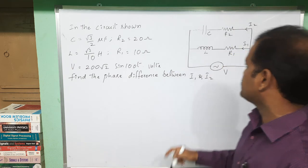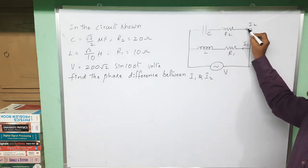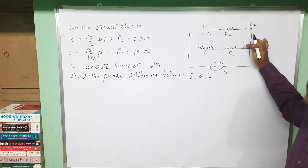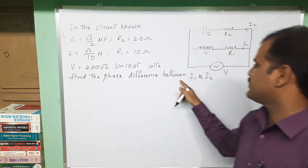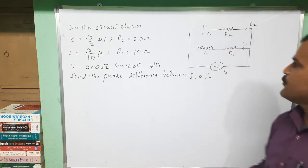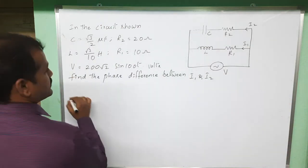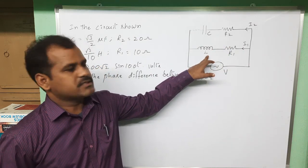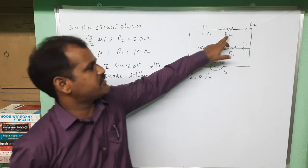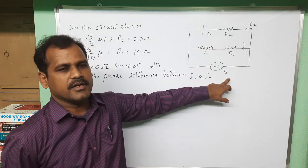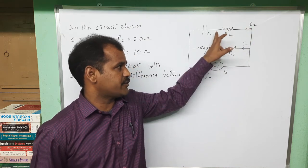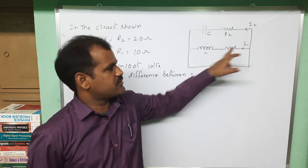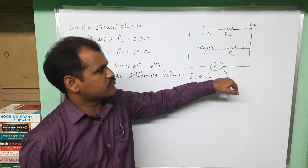What we need to find: the current passing through one branch is i2 and the current passing through the other branch is i1. We need to find the phase difference between i1 and i2. To solve this, consider that one loop is an RL circuit and the other loop is an RC circuit with the applied voltage. We know the phase difference between current and voltage in both RC and RL circuits.